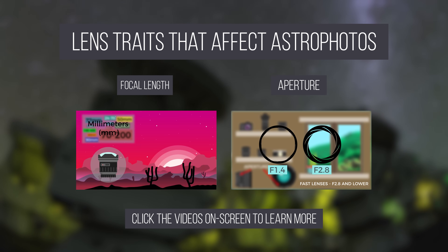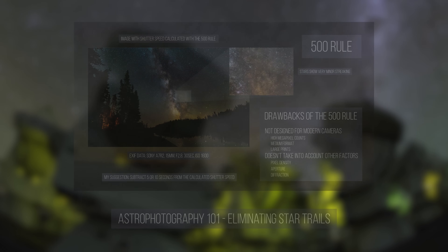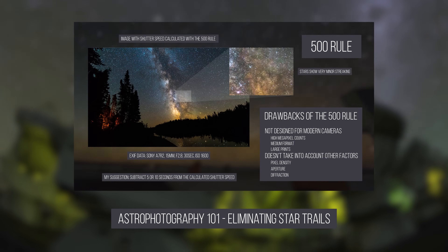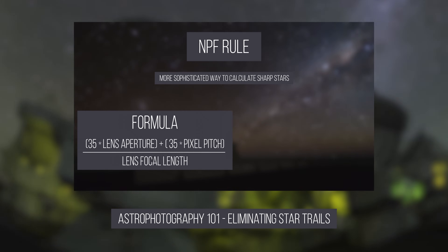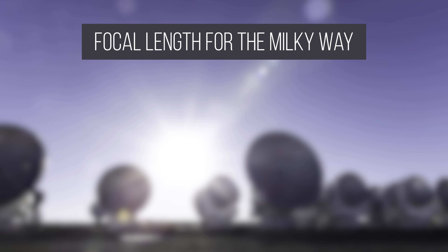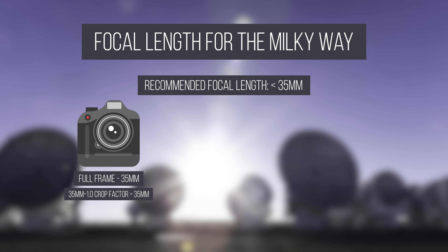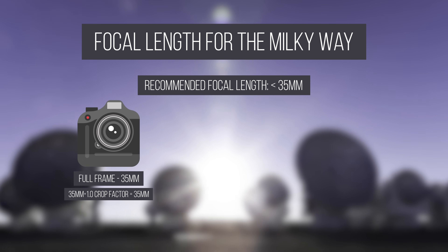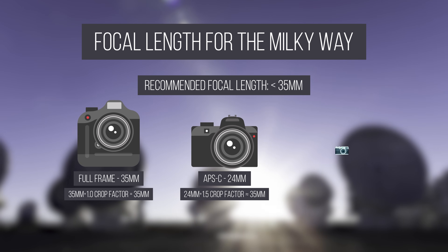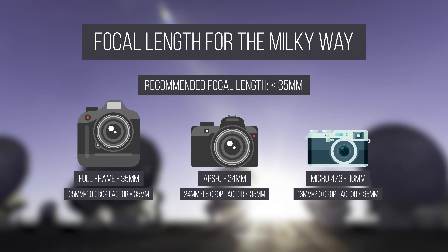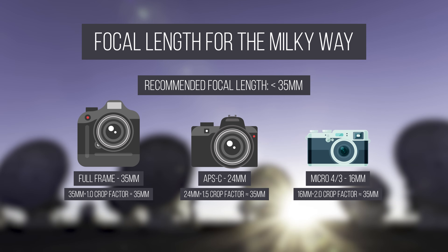But what focal length should you use? In another Astrophotography 101 episode, I explained how to eliminate star trails and how increasing focal length will decrease the maximum shutter speed that you can use. Thus, the focal length I recommend for Milky Way photography is anything less than 35mm. That means that on an APS-C camera you will need a 24mm lens, and on a Micro Four Thirds camera a 16mm lens for your maximum focal length.